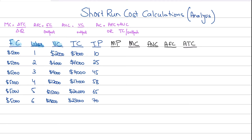The variable cost is obviously the cost that changes with output — the more output produced, the more is the variable cost. For the sake of simplicity, let's assume that labor is the only variable factor right now, although obviously raw materials and other variable factors would also be part of variable cost.